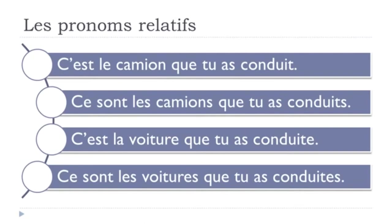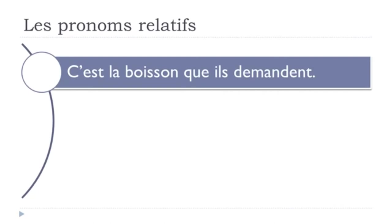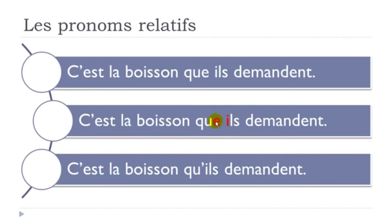One more thing: when 'que' is followed by a word starting with a vowel, elision applies. 'Que' + vowel → 'qu''. Example: 'C'est la boisson que ils demandent' → 'C'est la boisson qu'ils demandent.' The 'e' in 'que' disappears before the vowel, as usual in French.